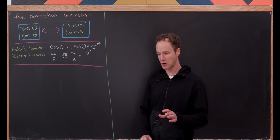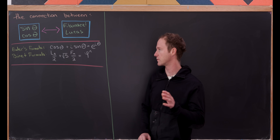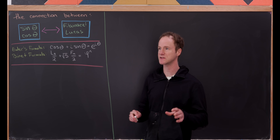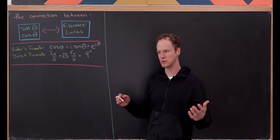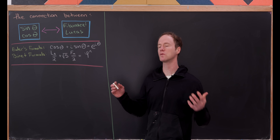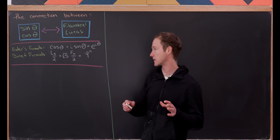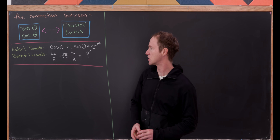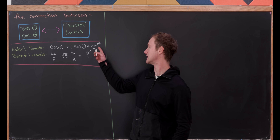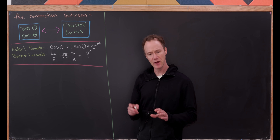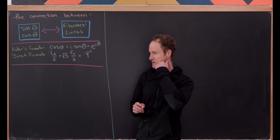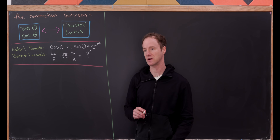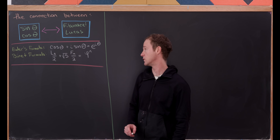We'll start with a version of Euler's formula for the Fibonacci and Lucas numbers, and this starts to tie these two pairs of objects that don't really seem similar together. Euler's formula says that cosine θ plus i sine θ is equal to e to the iθ. It really tells us how to deal with complex exponentials. There are several proofs of this formula — I've done a couple on the channel.